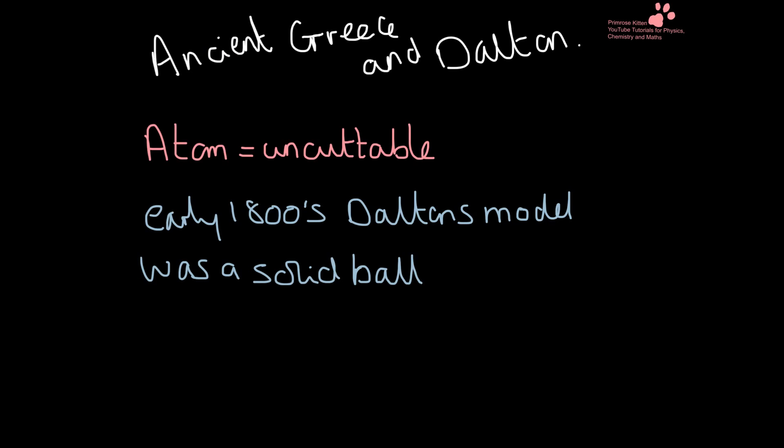Starting off in ancient Greece, the word atom in ancient Greek means uncuttable. When Dalton was developing his model, he thought the atom was a solid ball — also described as the billiard ball model. Dalton thought this was the smallest thing possible, so he called it an atom because he didn't believe it could be cut into anything smaller.